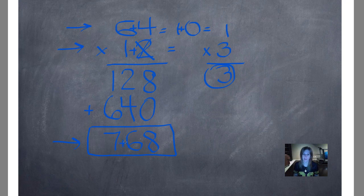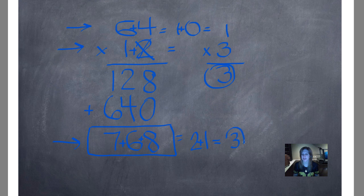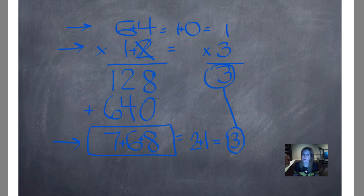We're going to check it using digital root just to make sure. 6 plus 4 is 10, and 1 plus 0 is 1. 1 plus 2 is 3 — already a single digit. Now we multiply: 3 times 1 is 3. Three is our magic number. Now we'll add up the digits in our final product: 7 plus 6 plus 8 equals 21. Can't have a two-digit number, so 2 plus 1 is 3. Three is our magic number, and we connect those with our power bar.